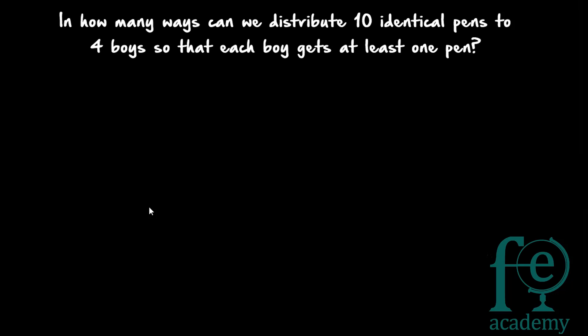There are 10 identical pens to be distributed to 4 boys, and each boy should get at least 1 pen. We can give 1 pen each to every boy — 1 pen to the 1st boy, another to the 2nd, 3rd pen to the 3rd boy, and 4th pen to the 4th boy. In this video, we are going to study a new formula for the distribution of identical objects among N people.